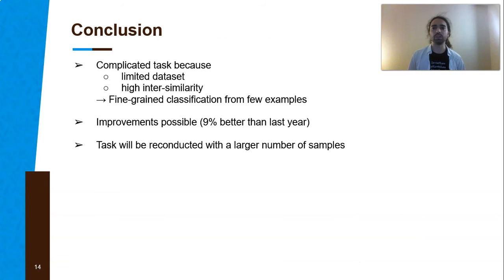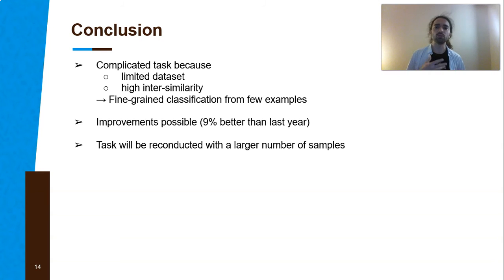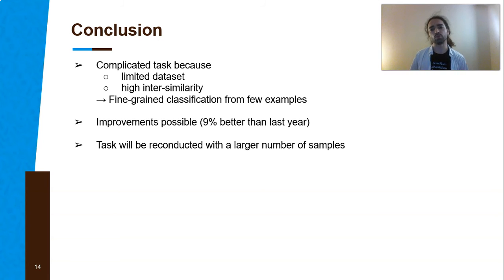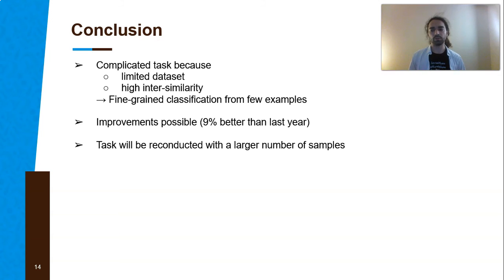This task is very challenging because we need to perform classification on a limited dataset, and the similarity between the different classes is very high. That is why we call it fine-grained classification from few examples. This year it was proven that improvements were possible — 9% better than last year. Next year, we are planning to reconduct this task but with a larger number of samples. We still need to agree on how to split the dataset — training and test samples might come from the same video, which could make the task somewhat easier.